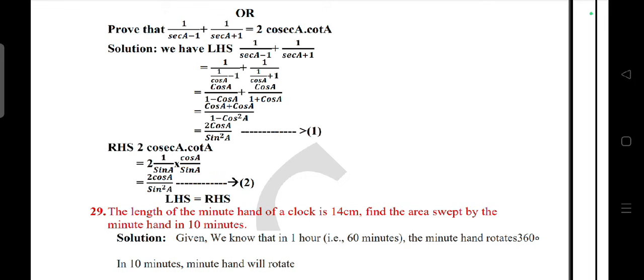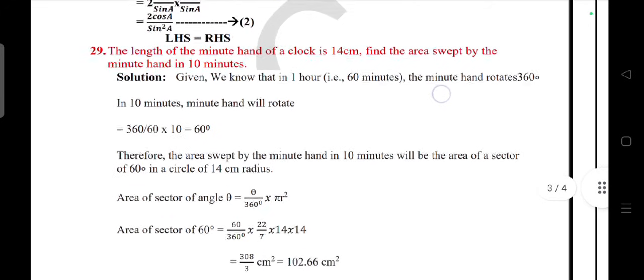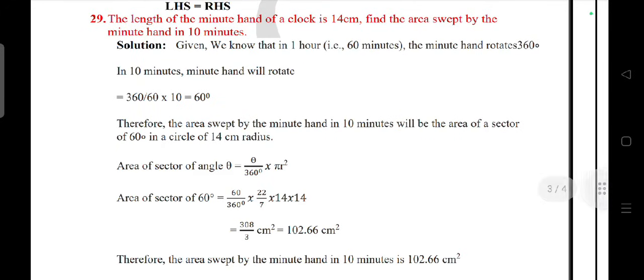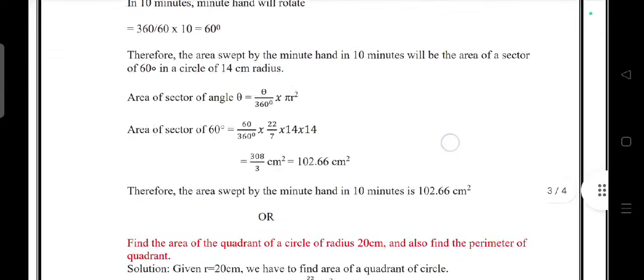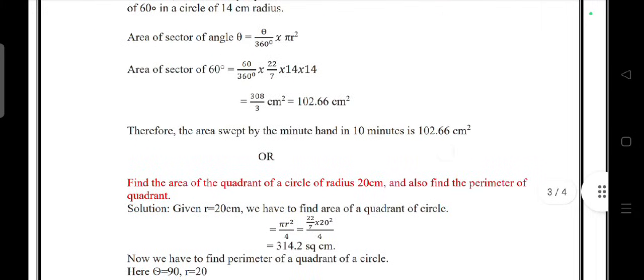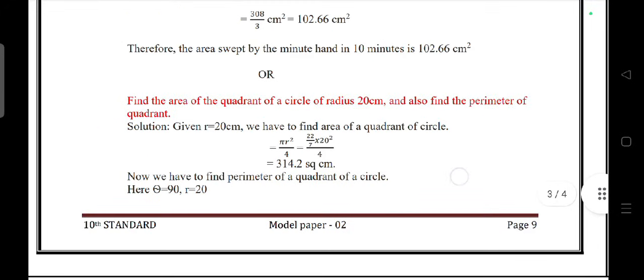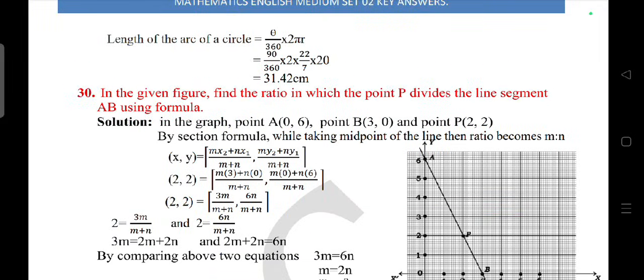Prove that 1 by secant A minus 1 plus 1 by secant A plus 1 equals cosecant A into cot A. Take answers. The length of the minute hand of a clock is 14 centimeter, find the area swept by the minute hand in 10 minutes. Or find the area of a quadrant of a circle of radius 20 centimeter and also find the perimeter of the quadrant. Length of the arc equals theta by 360 into 2 pi r, you will get 31.42 centimeter.